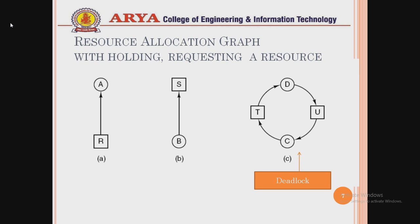In the next slide we discuss resource allocation graphs. In Figure A, a rectangular box represents a resource and a circle represents a process. In Figure B, process A is holding a resource, whereas process B is requesting a particular resource.